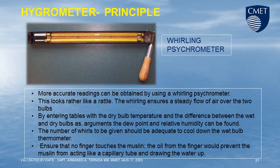From the readings, the dew point and relative humidity can be found. The number of rotations given should be adequate to cool down the wet-bulb thermometer. Ensure that no finger touches the moist limb, as the oil from a finger would prevent the moist limb from acting like a capillary tube and drawing the water up.